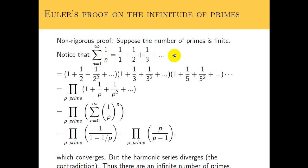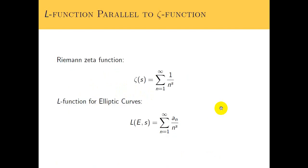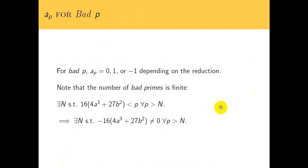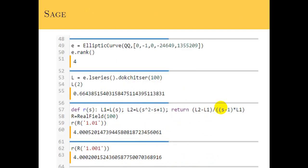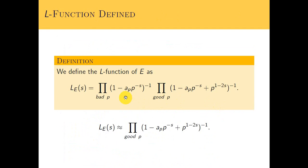My point in showing this slide again is that Dirichlet series have an Euler product expansion — you can always write a Dirichlet series out as a product. So instead of showing how that works exactly for the L-function, I'm just going to define it as the end result. Here's how we're defining the L-function: here's what you get when you expand that Dirichlet series into a product. You get a product of two products.